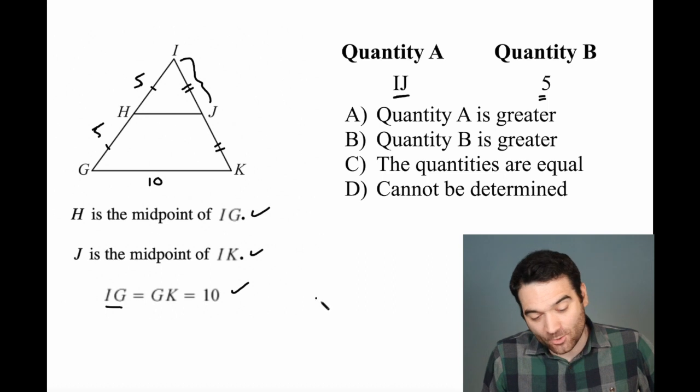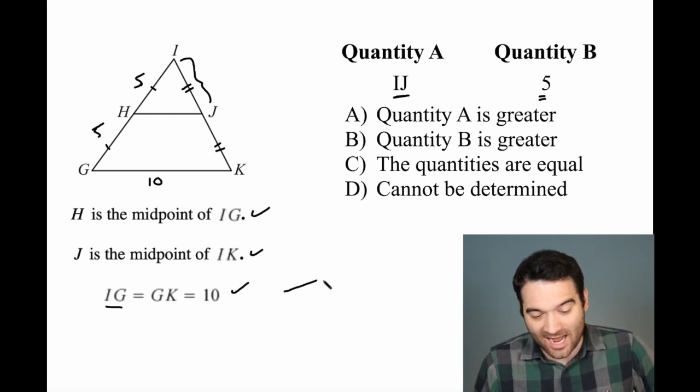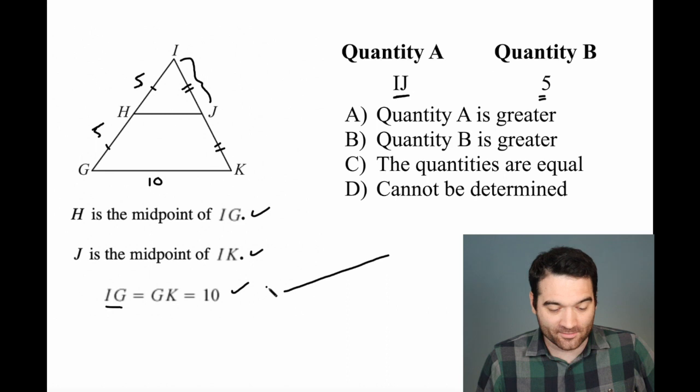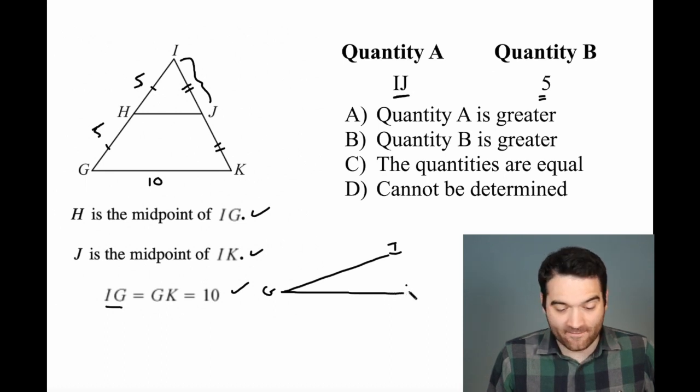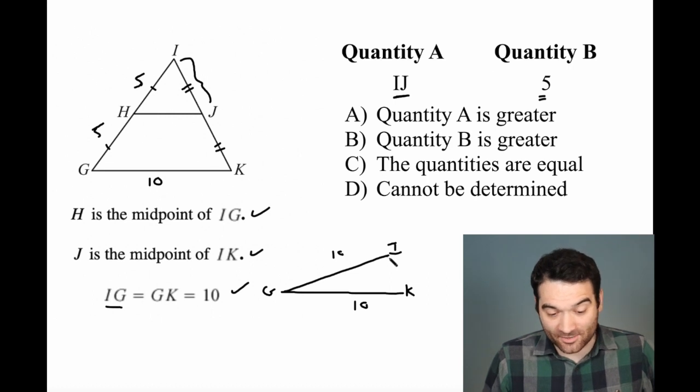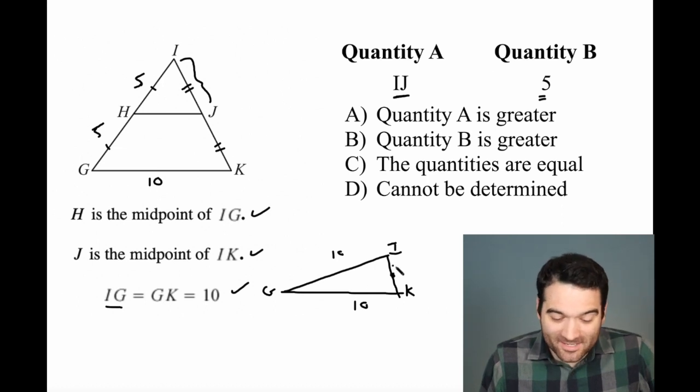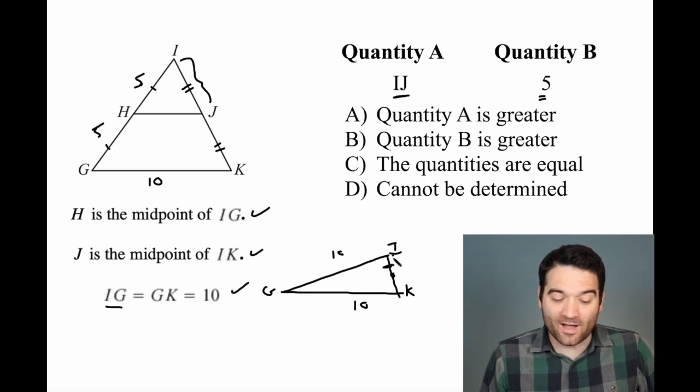So I'm going to redraw the triangle like this. Here's GI. I'm making that a little more tilted right there. So there's GI, and here is GK. Both of these are 10. This is still a triangle, and I could put J right there, but as you can see, right, this is nowhere near equal to 5,